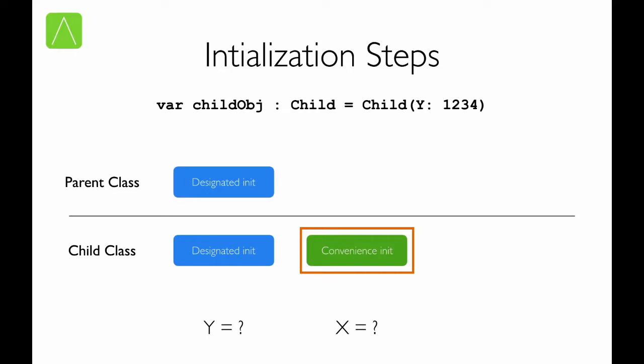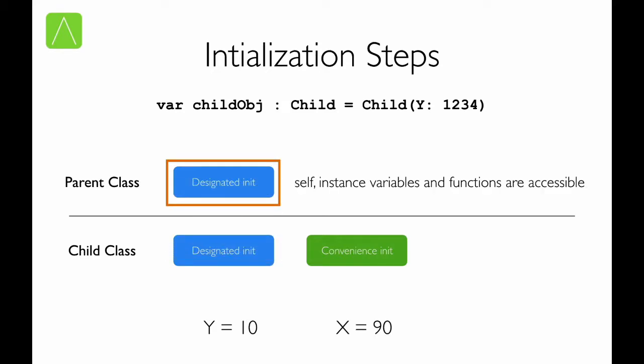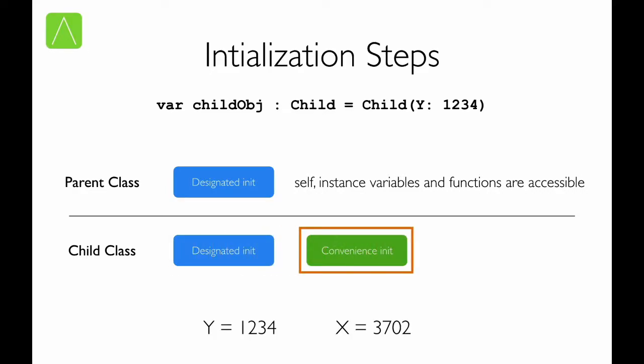This slide goes over the flow of the init process in a graphical map. First, the convenience initializer is called. Memory is allocated for y and y is initialized to 10. The convenience initializer then delegates to the designated initializer of the child class, which in turn delegates to the parent's designated initializer, which allocates memory for variable x and initializes it to 90. At this point, phase 1 of the initialization process is completed. Self and member functions can now be referenced. The call returns to the child class designated initializer, then back to the convenience initializer, where y is assigned the value 1234 passed into the initializer, and x is assigned 3 times the value of y — in this case, 3702.